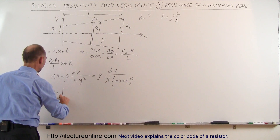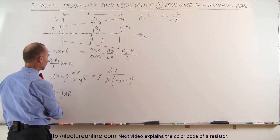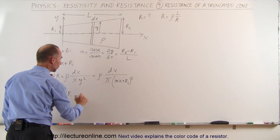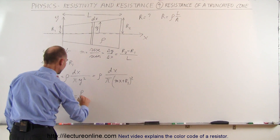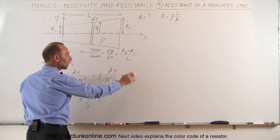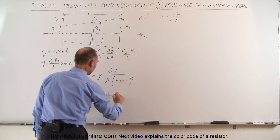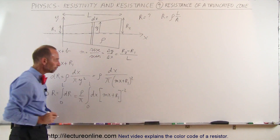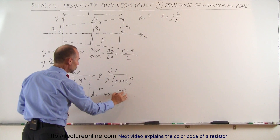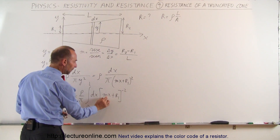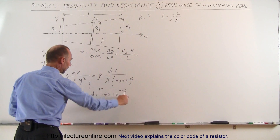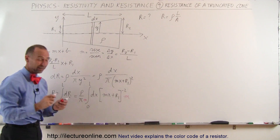So R is going to be equal to the integral of all the little dRs, and we're going to integrate from x equals 0 to the length L. That is equal to the constants — the resistivity divided by pi — then integrate from 0 to L of (mx plus R1) to the minus 2 power, dx. I need a du: the differential of what's inside is m times dx. So I'm missing an m; I have to divide by m over here so that I can insert m times dx as the differential of what's inside the brackets.